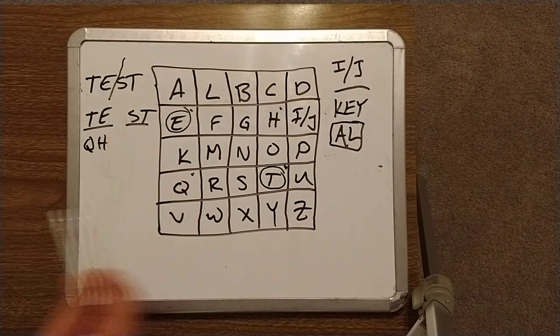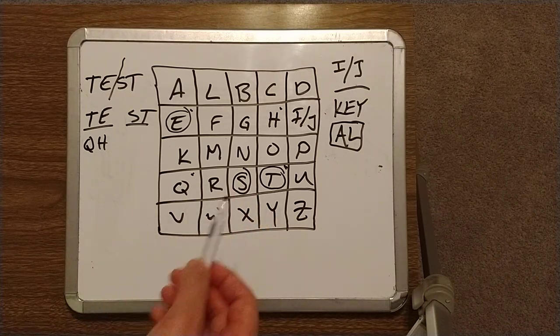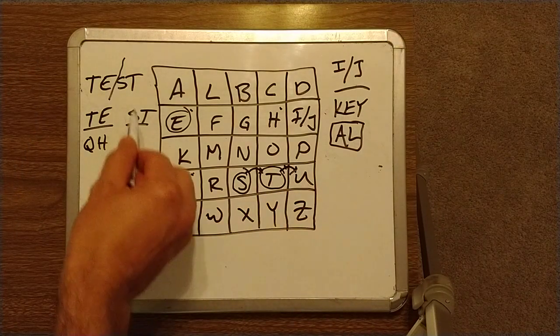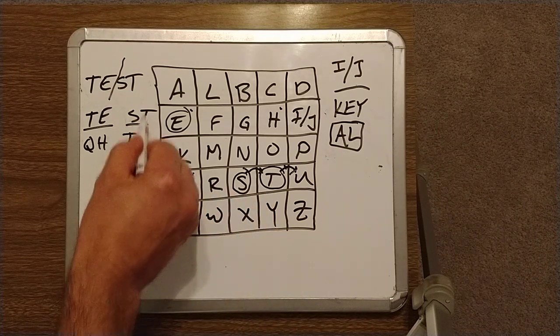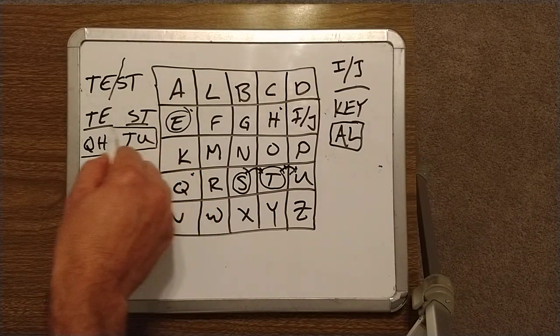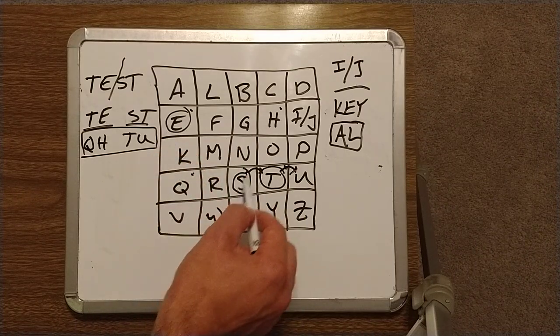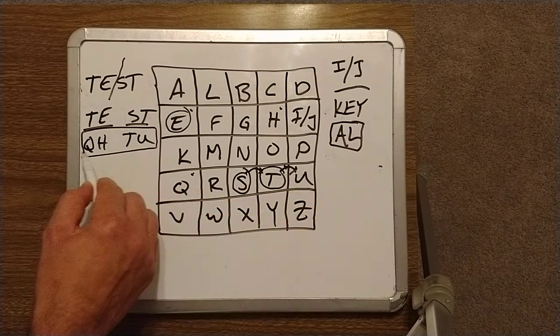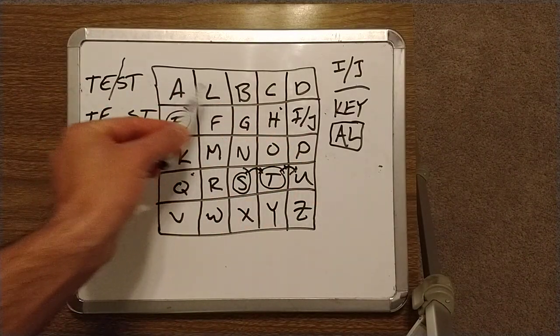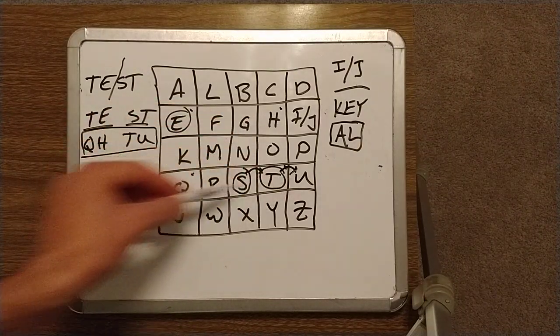Our E squares up with the letter H in the same row. So in the same row, we use the letter H. The next digraph is S and T. S and T exist in the same row. When they exist in the same row, what you actually do is use the letter adjacent as your encryption. So the letter adjacent to S is the letter T. The letter adjacent to T is the letter U. So our complete encryption for test is Q-H-T-U. The only way that someone would be able to decrypt this or decipher this is if they knew that we were working from an AL key digraph.